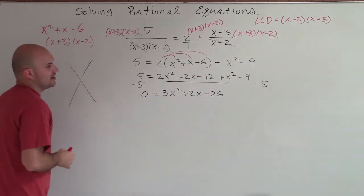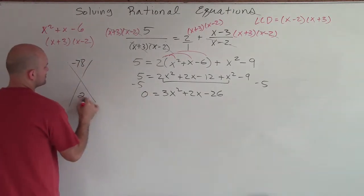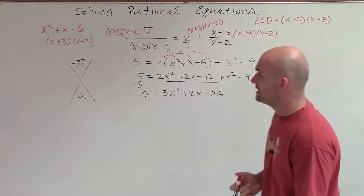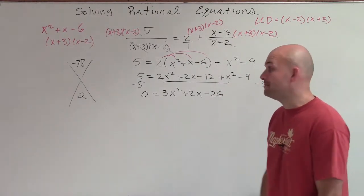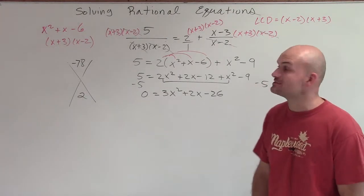So I do 3 times negative 26, which would be a negative 78. And then I take my middle term 2. And I need to determine what two numbers multiply to give me negative 78, but then add to give me positive 2. I am not aware of any two values that have a difference of 2.